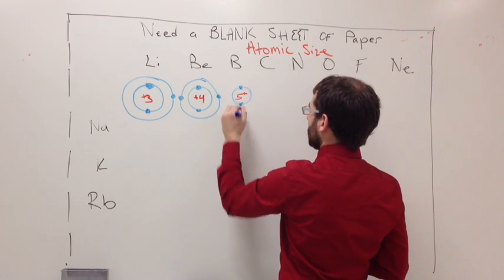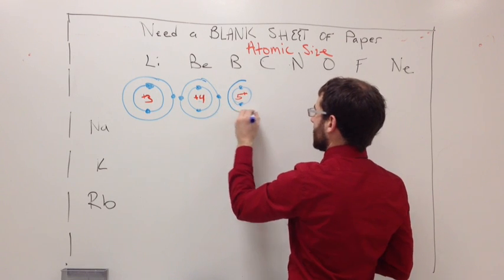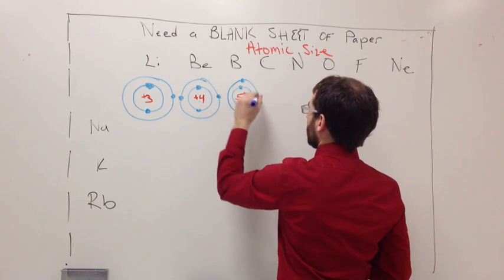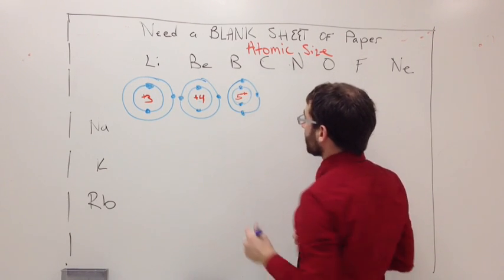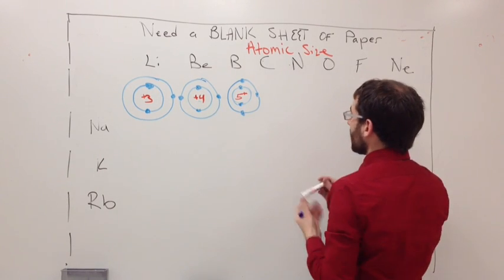So you're going to get two here. And then on the outside here you're going to have one, two, and then three. So this is going to be even smaller. Carbon. Plus six. Same thing. Smaller.